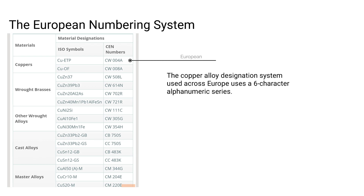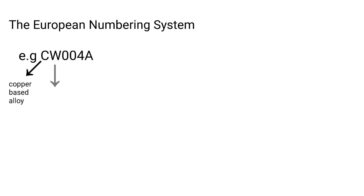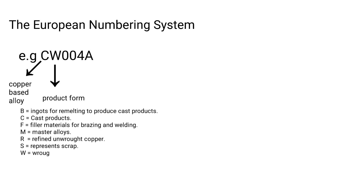The European Numbering System uses a six-character alphanumeric series. The first character is C for copper-based alloy. The second letter indicates the particular product form: B represents ingots for re-melting to produce cast products; C means cast products; F indicates filler materials for brazing and welding; M represents master alloys; R indicates refined unwrought copper; S represents scrap; W means wrought products; while X indicates non-standard or unified materials.